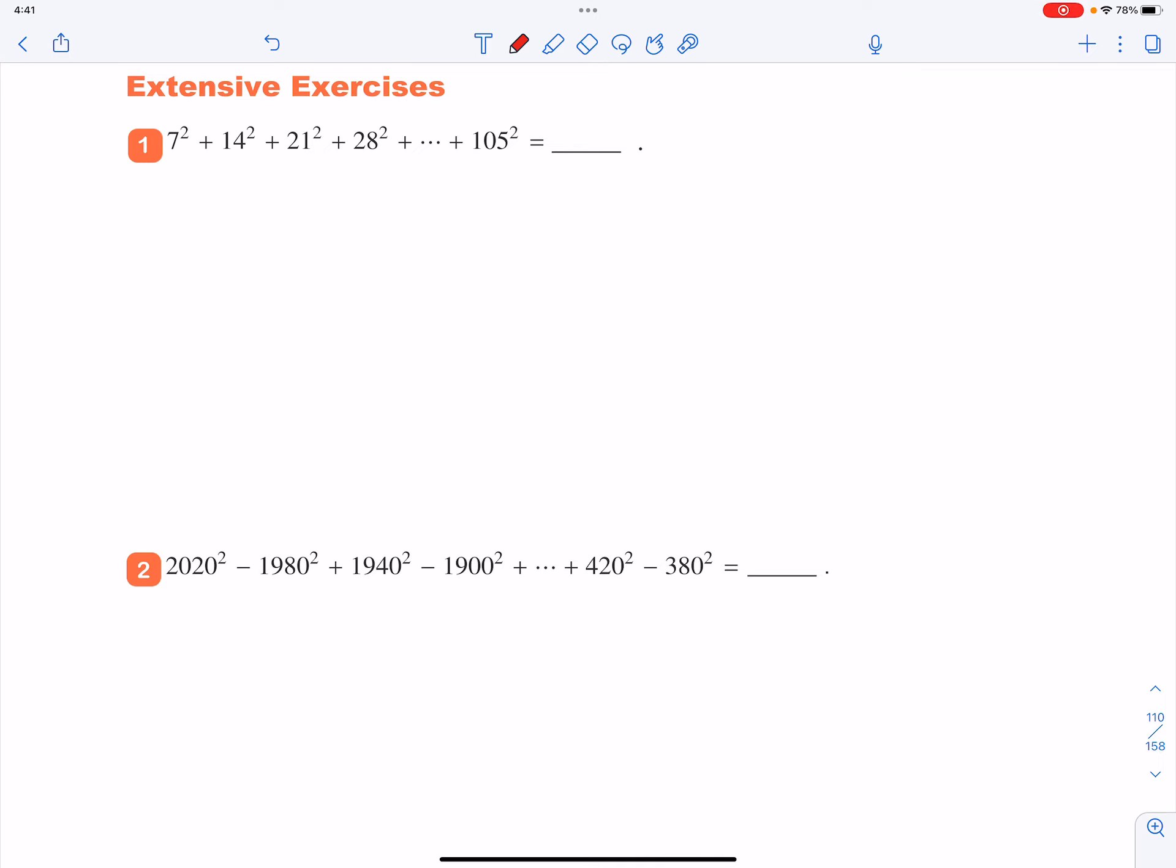You will find that the base numbers are multiples of 7. So that means we can find the common factor of each term, which is 7 squared.